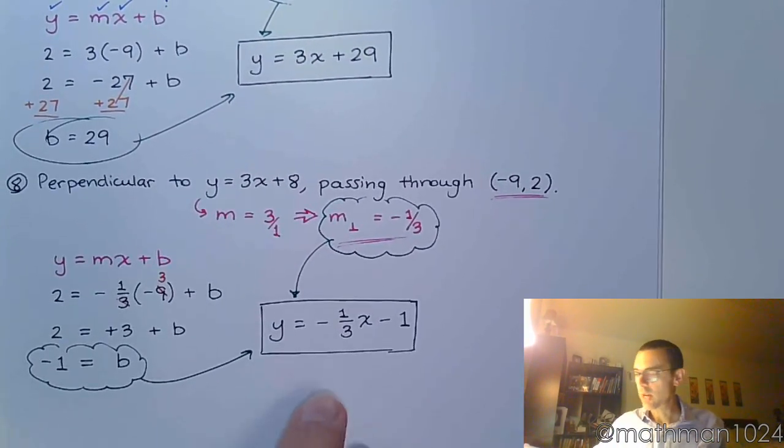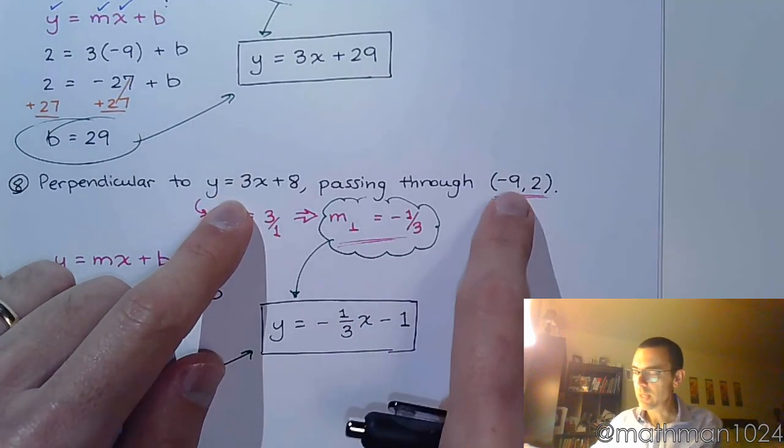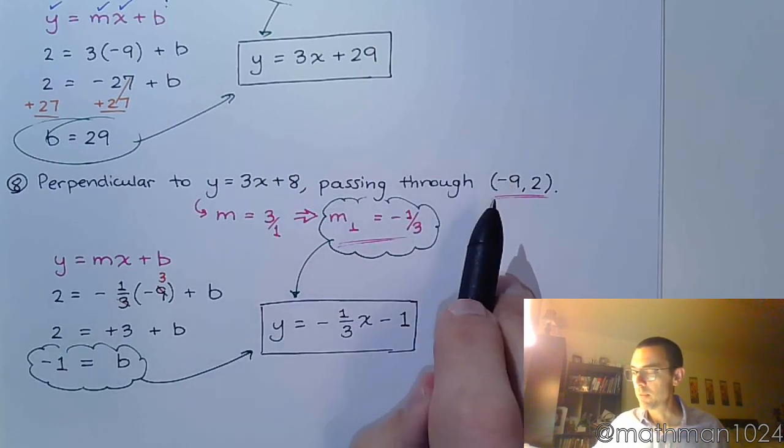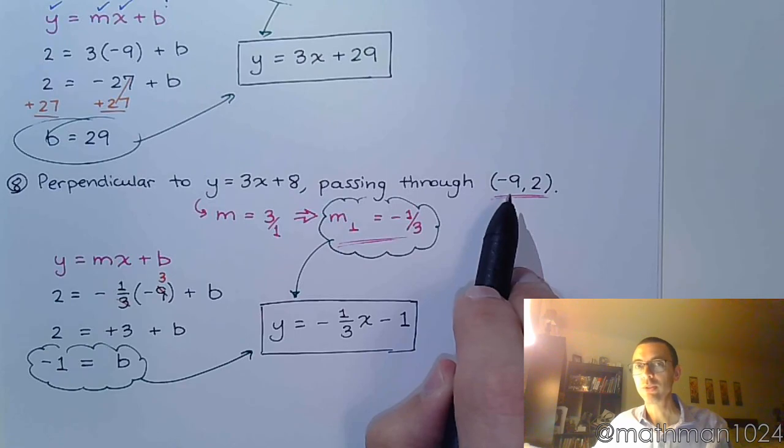The slopes here are negative reciprocals. You can plug in negative 9, and you're going to get out 2. So these two lines not only are they perpendicular, but that perpendicular line is going to go through that ordered pair negative 9, 2.